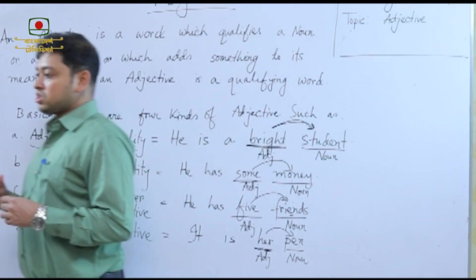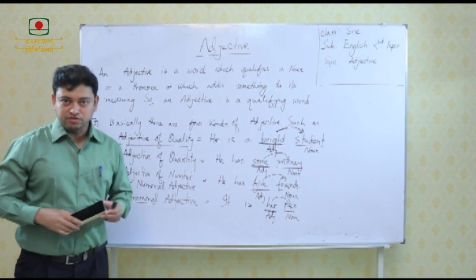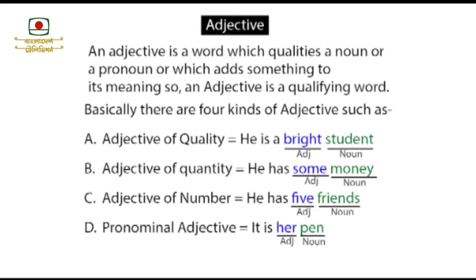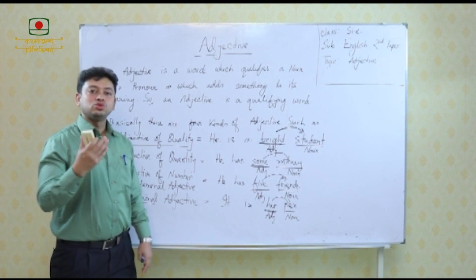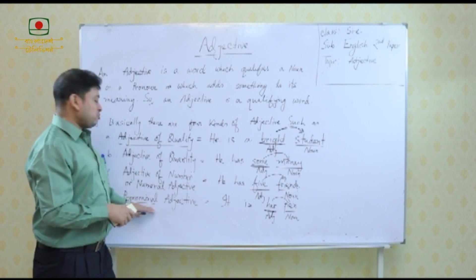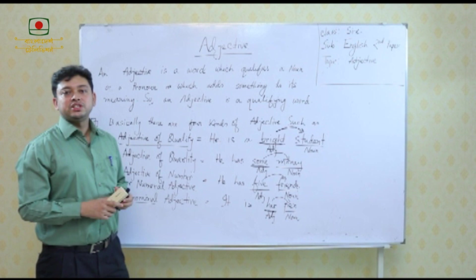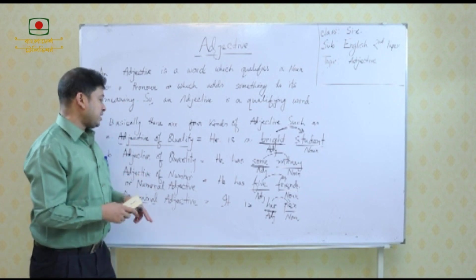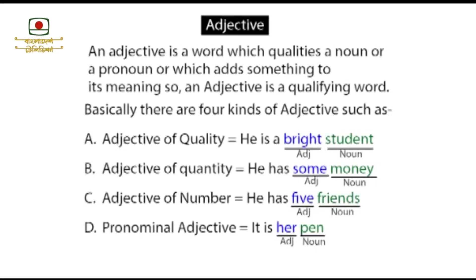Now we shall focus more on some other examples. Adjective of number or numeral adjective has further sub-classifications, and so does pronominal adjective. If we go through all these ideas, we will be able to understand almost all the classifications of adjectives. Please write down the examples in your copies, then we shall discuss adjective of number and pronominal adjective in more detail.